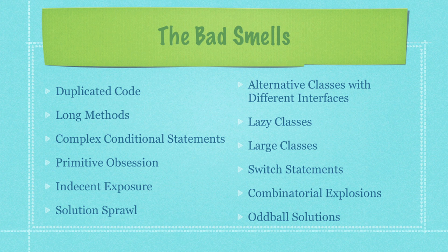Combinatorial explosion occurs when you use many methods to perform actions that could be done with one less specialized method — for example, creating methods for each database query rather than one method that handles numerous queries. Finally, oddball solutions occur when you solve the same problem in many different ways. You need to find the best solution and use it while deleting the duplicate solutions. So that's the overview — let's start getting into some bad smells and how to solve them.